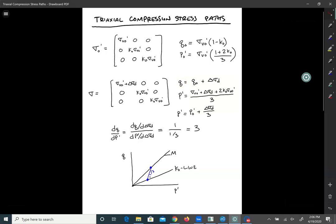Now the tricky part is that P prime is changing. Before, for the simple shear test, sigma V prime and sigma H prime were staying the same and we were adding shear stress. Therefore, P prime stayed the same. Now we're adding vertical pressure. So we're changing P prime.